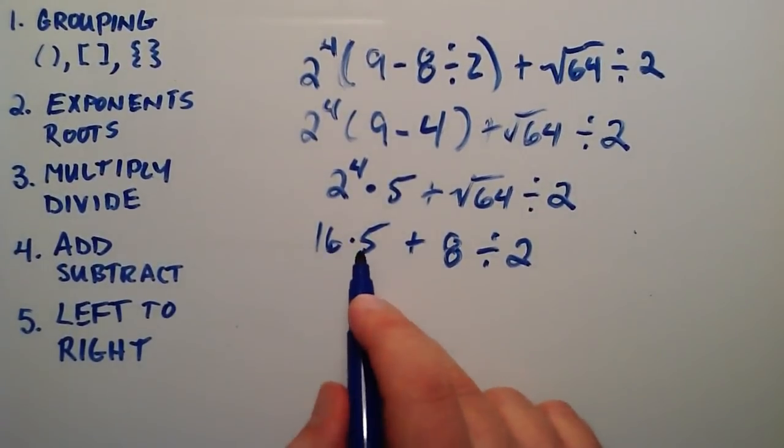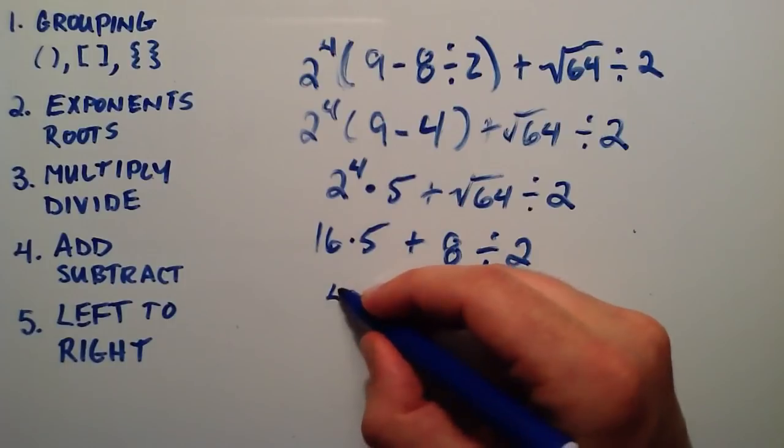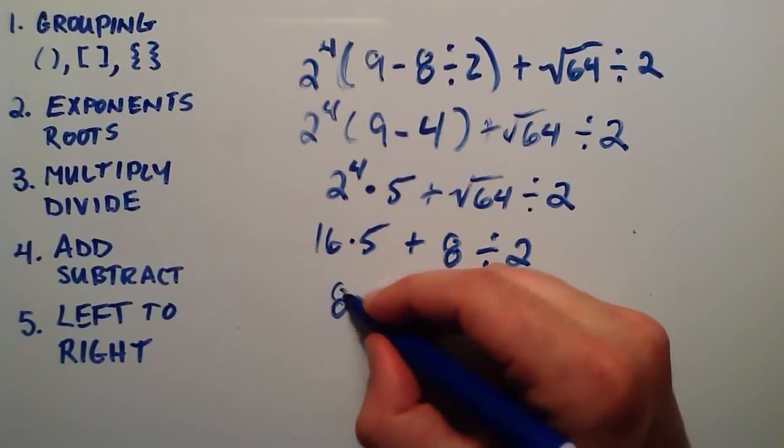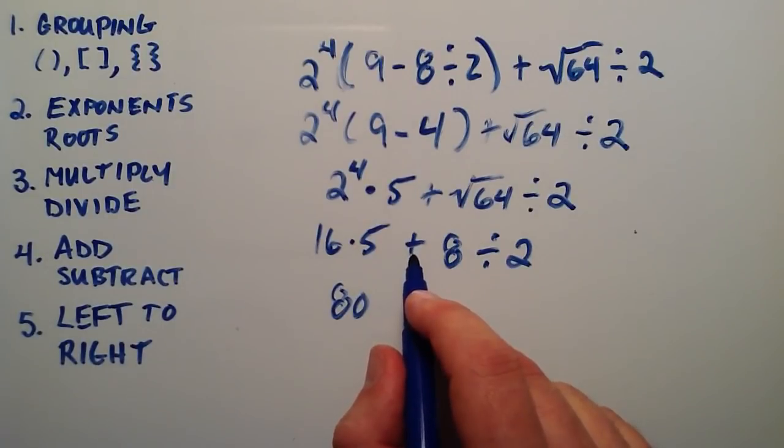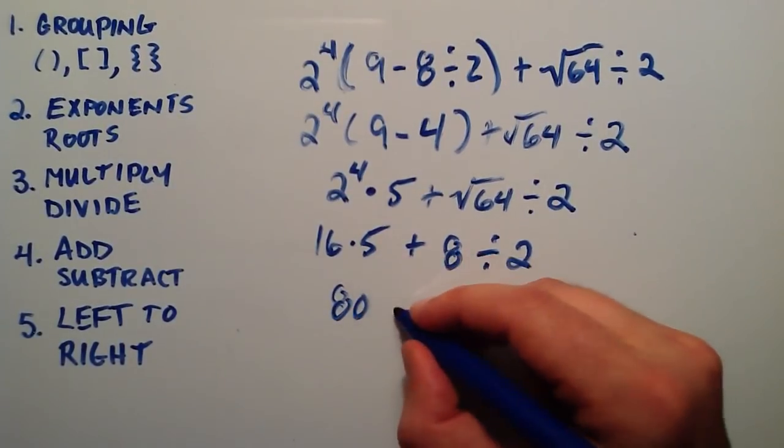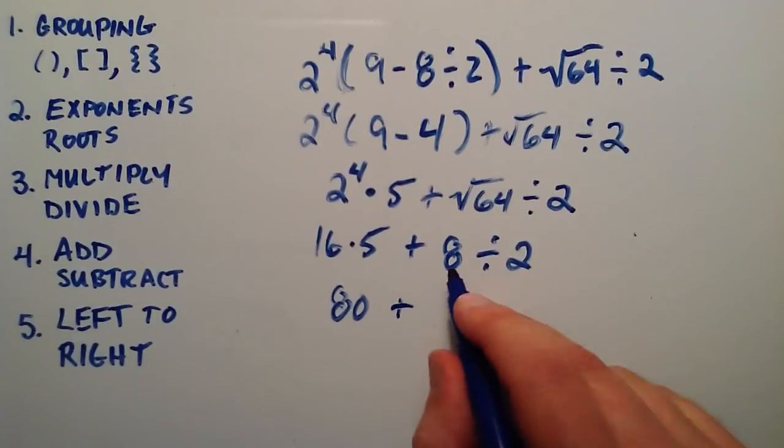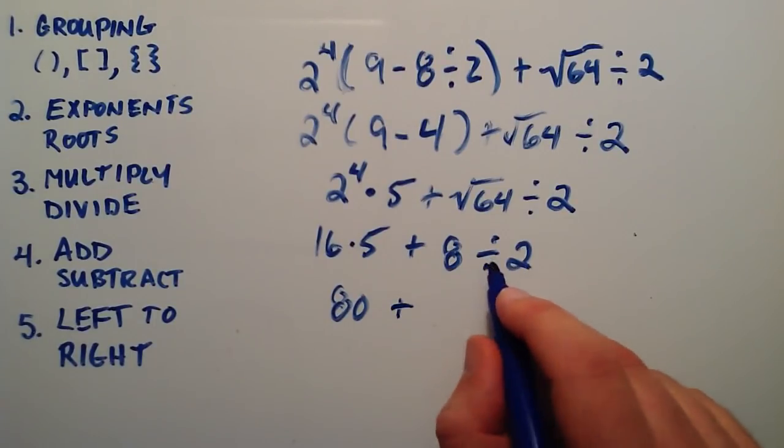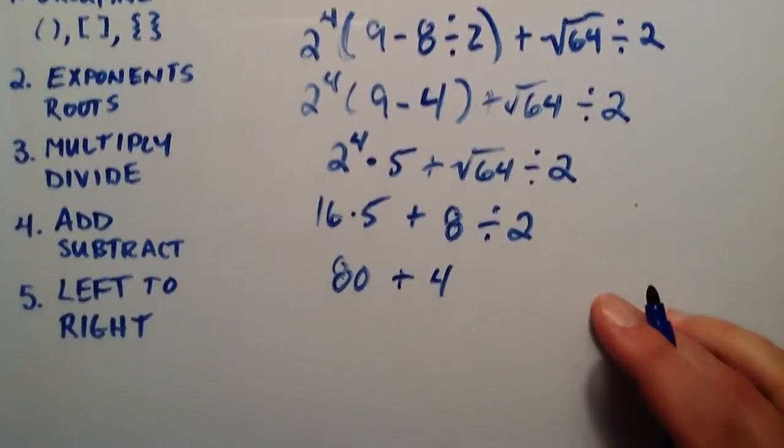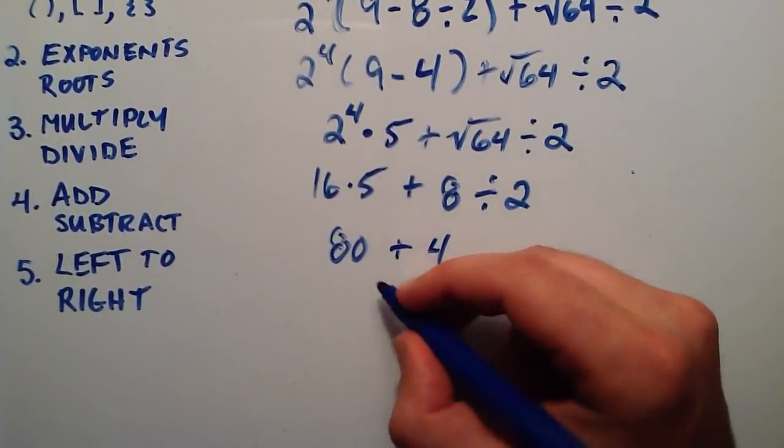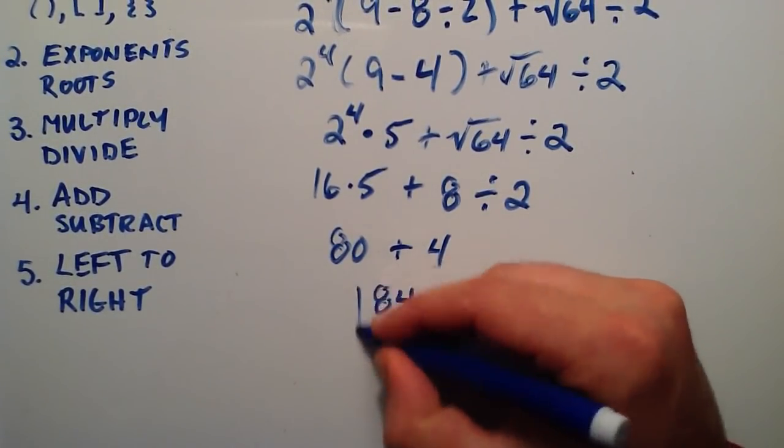So now if you were to work this out, 16 times 5 gives us 80. We're doing the multiplication and division first now, because that comes before addition. So this becomes 80. We write down the addition, and then we do the division next, since it's higher priority than the addition. 8 divided by 2 is 4. And adding the 80 plus the 4 gives us the result, 84.